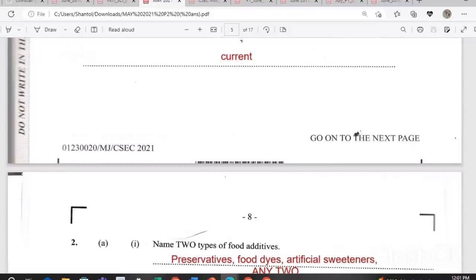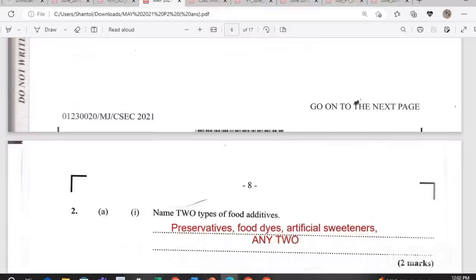Name two types of food additives. Food additives are anything that we add as extra to the actual product produced. If you have banana chips, bananas would be the actual food, but sometimes they add additional things to that food that would not normally exist. Some food additives are preservatives, food dyes, artificial sweeteners. Any two of those and you would get your two marks. Usually food additives do not contain any additional nutrients in most cases unless they say you're going to fortify with calcium.